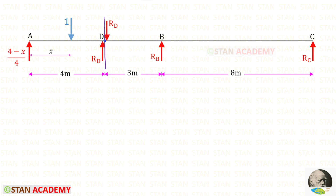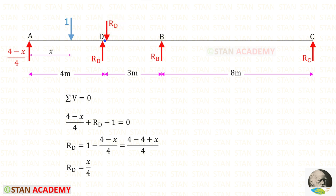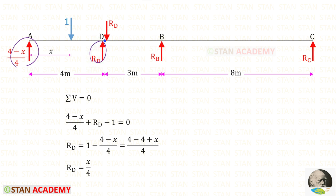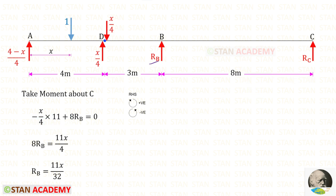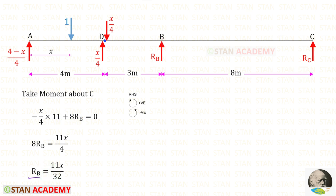From point D, we can split the beam into 2 parts. On the left of D we will have vertical reaction RD acting upwards, and on the right of D we will also have RD acting downwards. Both values of RD will be the same. On the left of the hinge, we can apply this rule and find RD. RA and RD are acting upwards, so both are positive. The unit load is acting downwards, so it will be negative. For RD, we will get X upon 4. Now, from D, we can take moment about C and find RB. For RB, X upon 4 is acting in the anticlockwise direction so it will be negative, and the distance is 11. RB is acting in the clockwise direction so it will be positive, and the distance is 8.